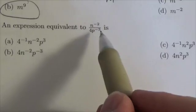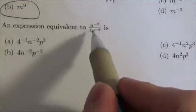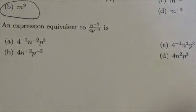Okay, so we're just looking to simplify this. There's nothing happening to the whole expression, so I'm just going to look at the pieces here. I've got n to the negative two, and I've got 4p to the negative three.